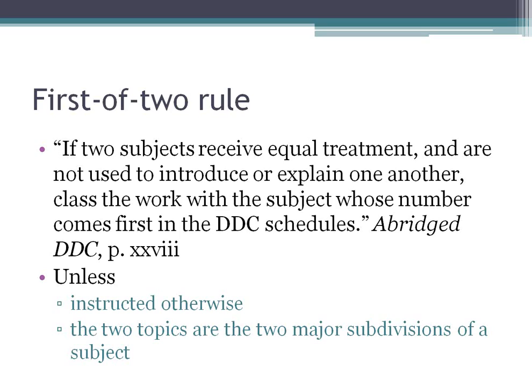The next rule is called the First of Two Rule. This rule comes into play if you have two subjects and neither one receives Fuller Treatment — they're pretty much treated the same. The direct quote from Dewey is: 'If two subjects receive equal treatment and are not used to introduce or explain one another, class the work with the subject whose number comes first in the DDC schedule.' That's why it's called the first of two.